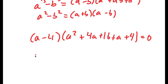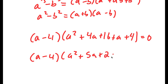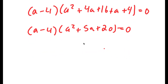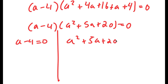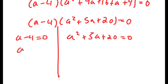This simplifies to a minus 4 times a squared plus 5a plus 20 is equal to 0. So now this gives me two equations. I get a minus 4 is equal to 0, and a squared plus 5a plus 20 is equal to 0. For a minus 4 equals 0, a is obviously equal to 4.